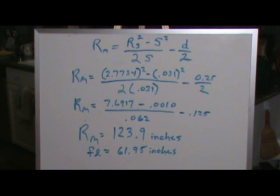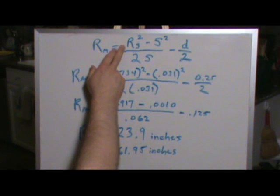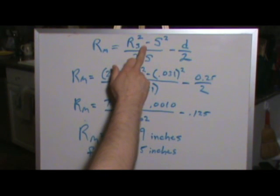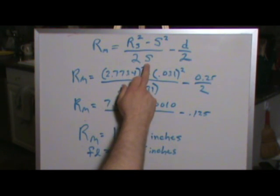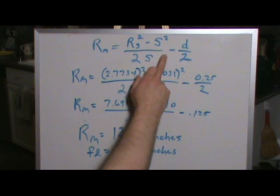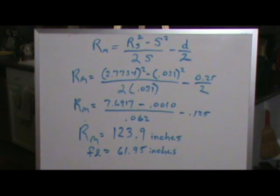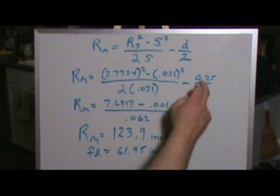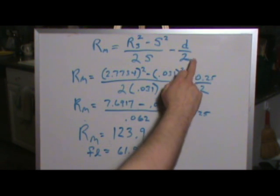And finally we're down to the spherometer equation itself. This lets you know the radius of the mirror equals the radius of the spherometer squared minus the sagitta measurement squared divided by two times the sagitta measurement. That quantity minus d over two, and d is the diameter of the ball feet on your spherometer. And on our spherometer their diameter is 0.25 inch, a quarter of an inch.